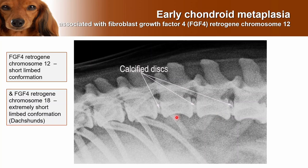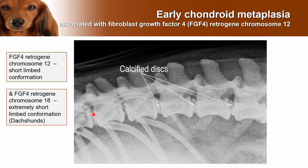In these dogs, early chondroid metaplasia means the intervertebral discs will often appear calcified on a radiograph — which is very easy to see. What's less easy to see is when a disc is no longer in position. In this dog, the site of the disc extrusion shows a slightly narrower disc space and the obvious clue is that there is no calcified disc at that site because it's all up in the canal. Unfortunately in this barrel-chested dog the rib is in the way, and there is also a possible candidate for a previous disc extrusion where the top of the disc is not rounded.